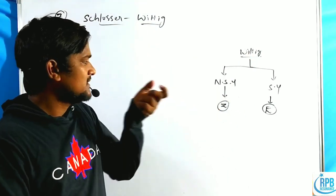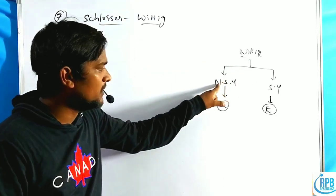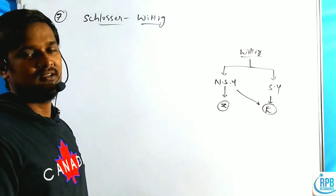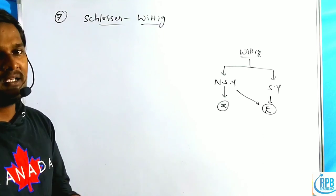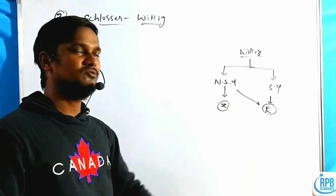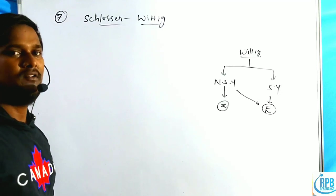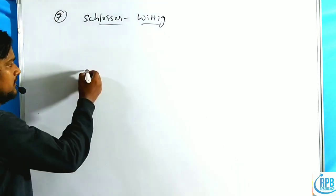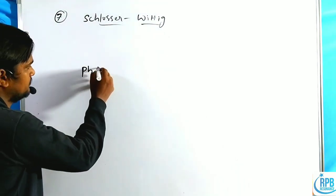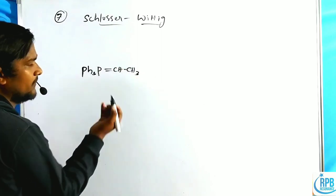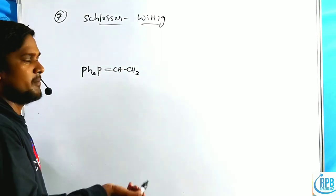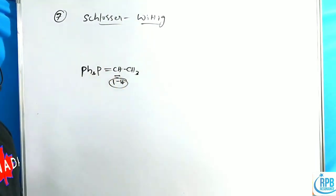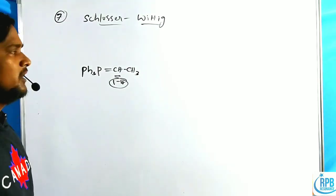However, Schlosser modified the stereochemistry of the Wittig reaction with non-stabilized ylides to give the E configuration. What is the minimum criteria required to convert the non-stabilized ylides to E-olefins? The ylide structure is PPh3 double bond CH-CH3. The phosphorus is attached to carbon — that is the alpha carbon. The alpha carbon requires at least one hydrogen. This is the minimum criteria for maintaining the Schlosser modification.